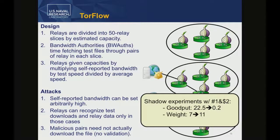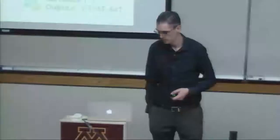We implemented TorFlow and ran shadow experiments combining attacks one and two together. In our experiments, in the median, we were able to reduce the goodput required—the actual data being transferred by the relay—from 22.5 down to 0.2 to get an even higher consensus weight in the median case. So the attack works, unsurprisingly, and can give you potentially hundreds of times more consensus weight and more client traffic than you're actually paying for in terms of bandwidth provided.